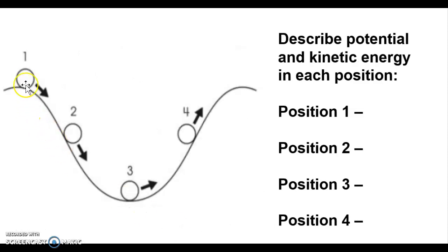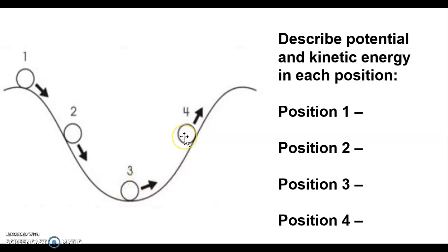In another example, ball A at position 1 has maximum potential energy because of its height from the ground, while kinetic energy is 0 because it is not moving yet. As it goes down, potential energy is converted to kinetic energy. As it reaches the ground, potential energy is 0 while kinetic energy is maximum, giving it energy to move back up. As it moves up, kinetic energy gradually decreases while potential energy increases, until at the topmost point all kinetic energy is converted back to potential energy and kinetic energy is 0.